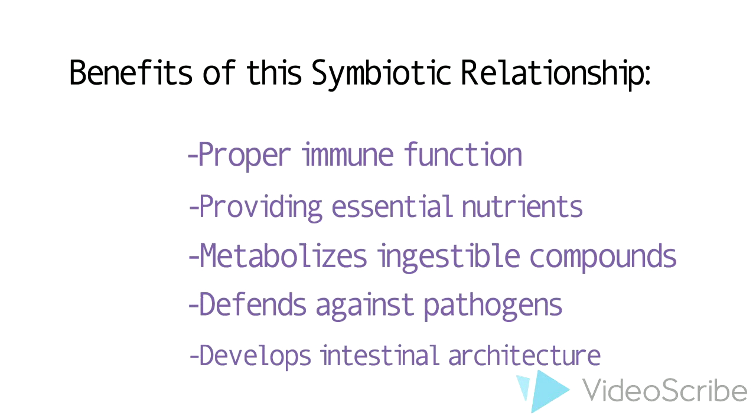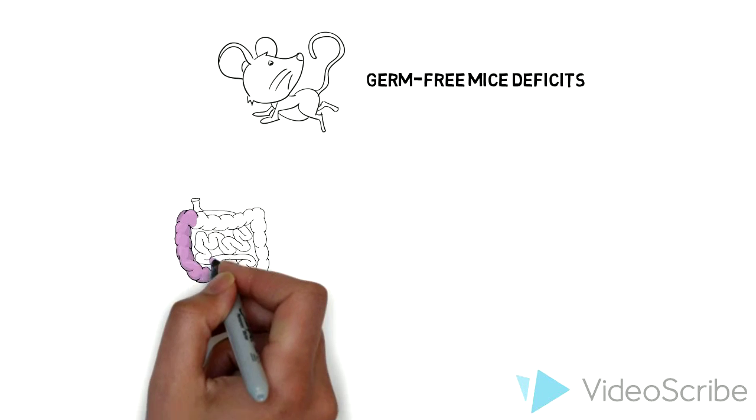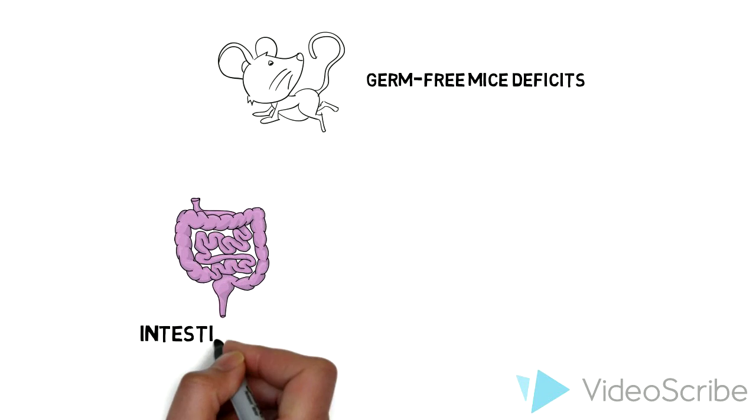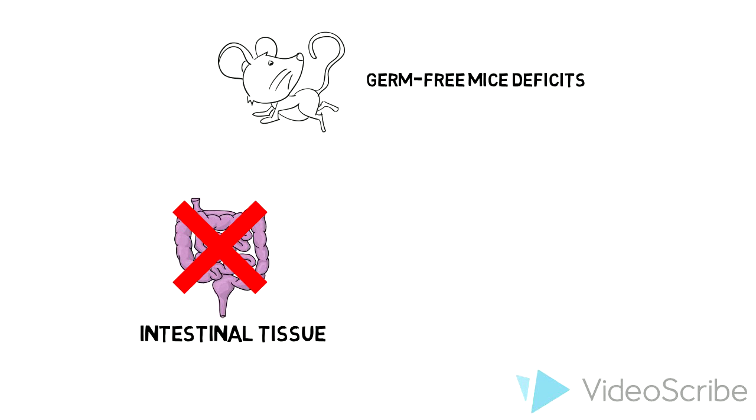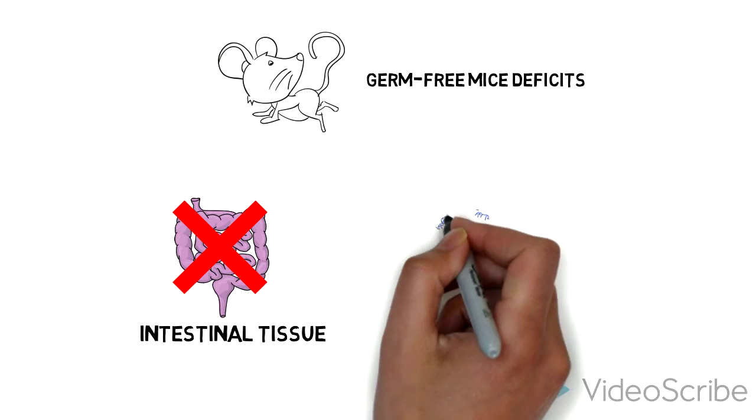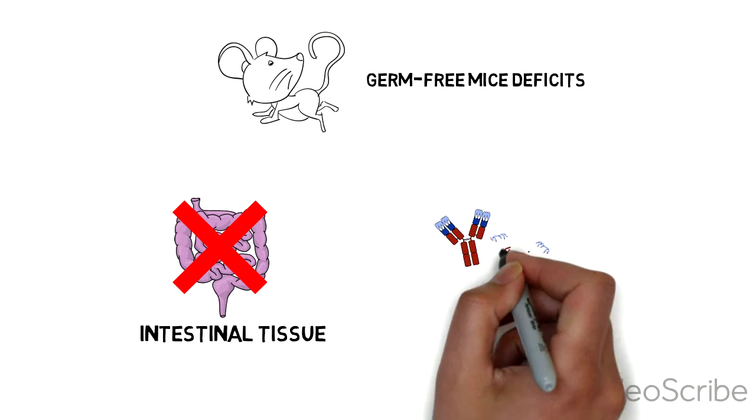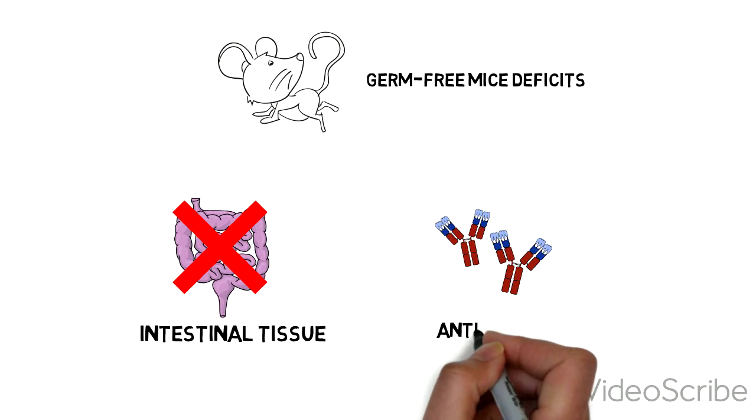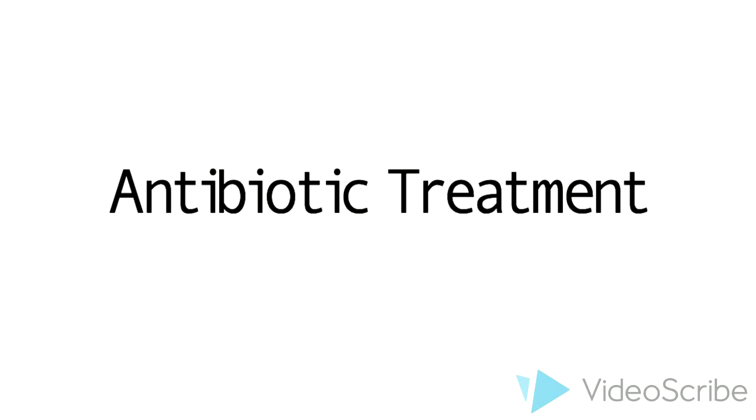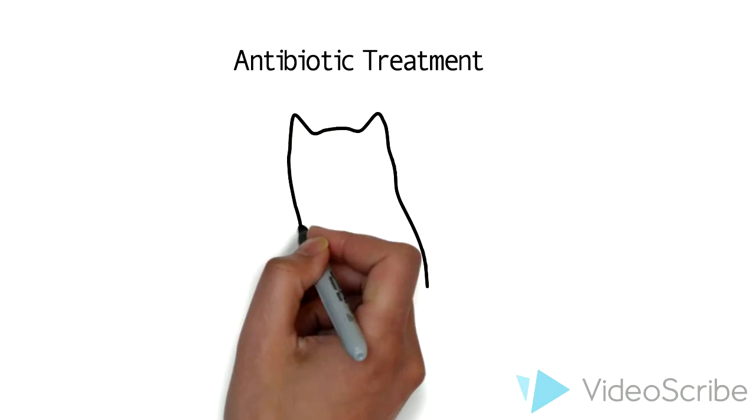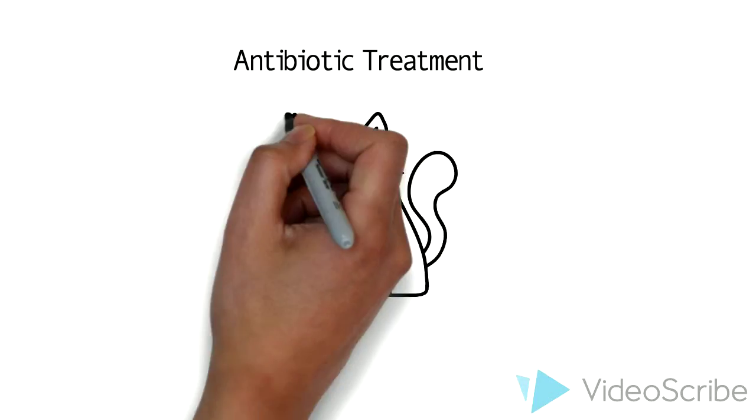In germ-free mice, there are significant deficits in the development of intestinal tissues and other structures which often develop following the introduction of gut bacteria. Not only that, but there are extensive deficits in antibody production, impaired development and maturation of isolated lymphoid follicles, and morphological tissue defects in the intestines. For example, intestinal epithelial cells showed altered patterns of microvilli formation and decreased rates of cell turnover.